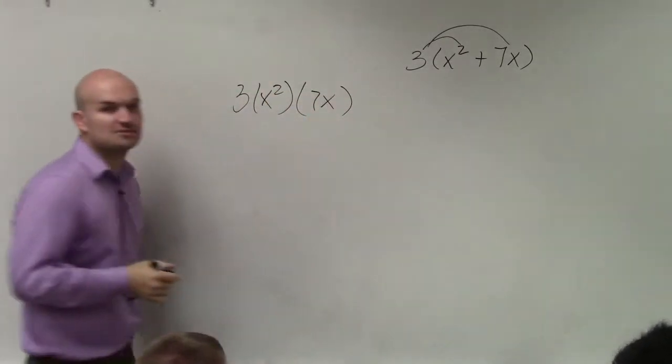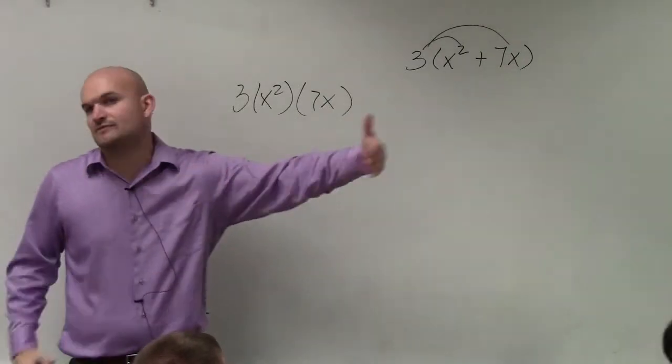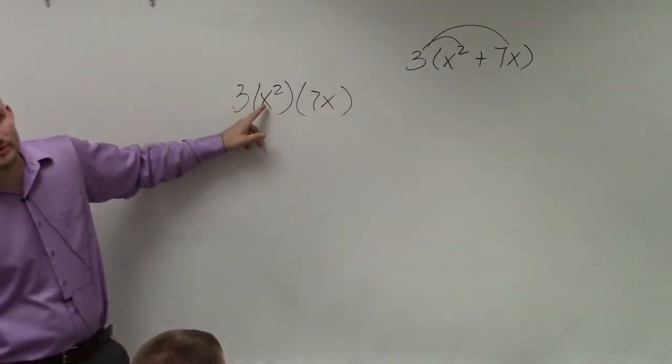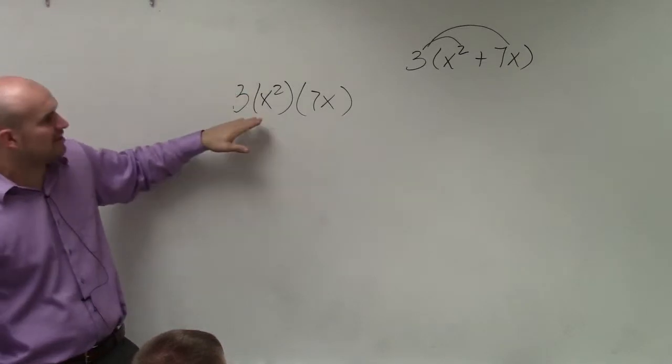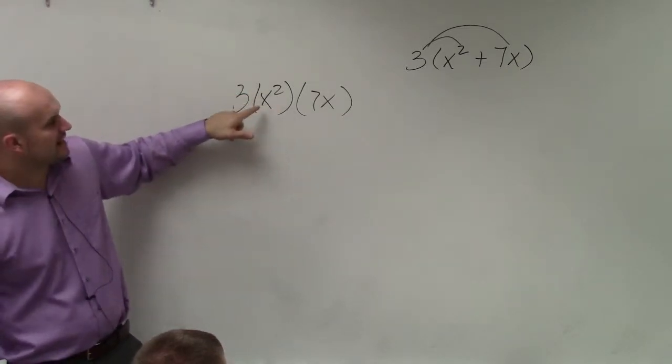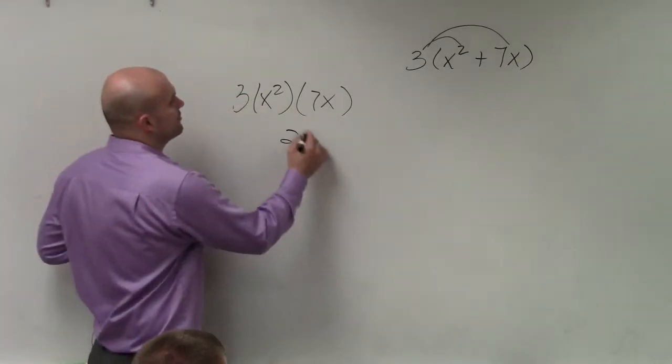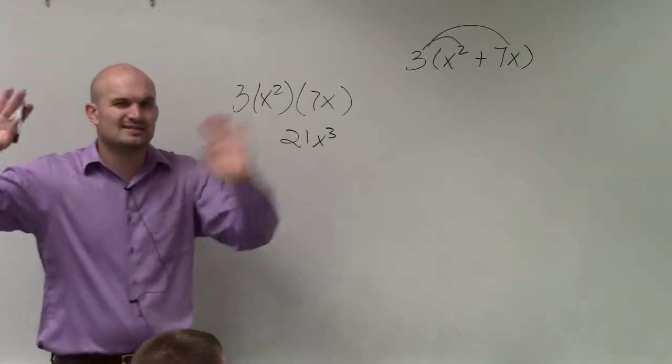It doesn't matter. It's just multiplication, so you just go from left to right. So 3 times x squared is 3x squared. I mean, this is kind of above the problem. And then 3x squared times 7 would be 21x cubed. Yeah, but we'll get to that kind of stuff later.